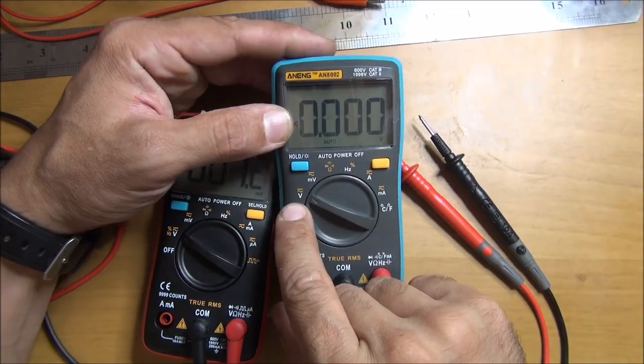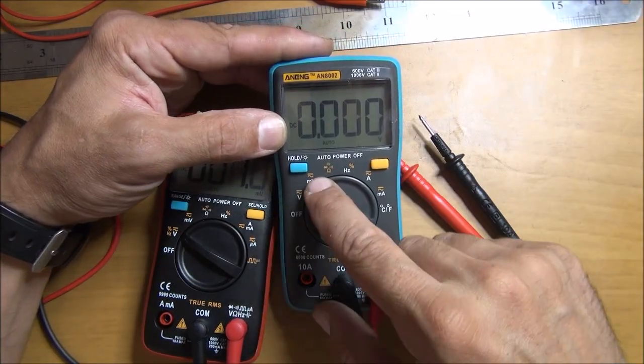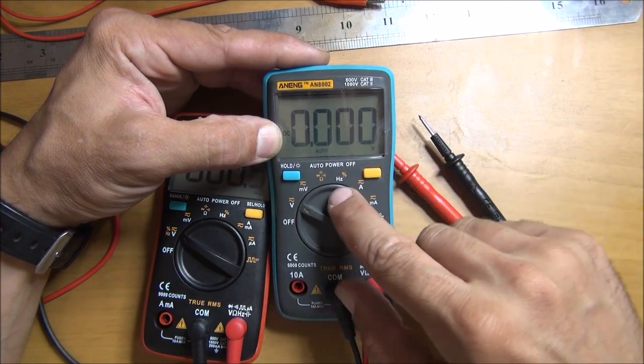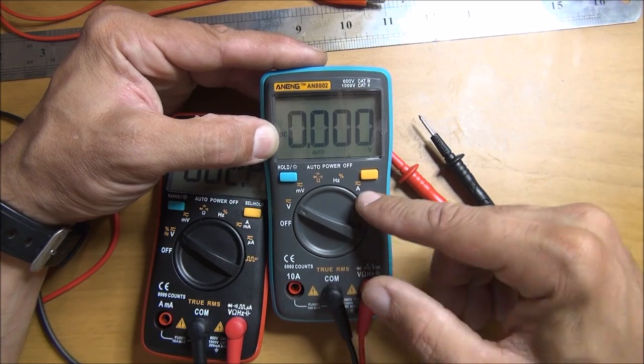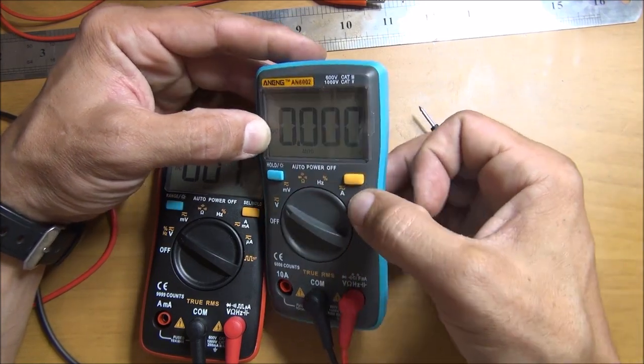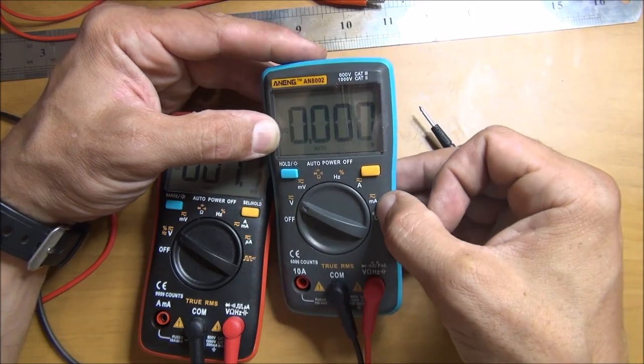So you have voltmeter here, millivoltmeter, ohmmeter, diodes, capacitors, duty cycle, hertz, etc. And amps for alternative and continuous, microamps, milliamps.